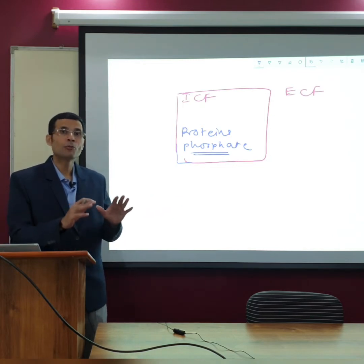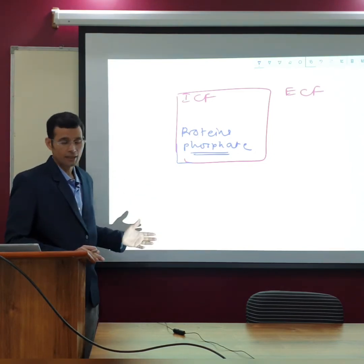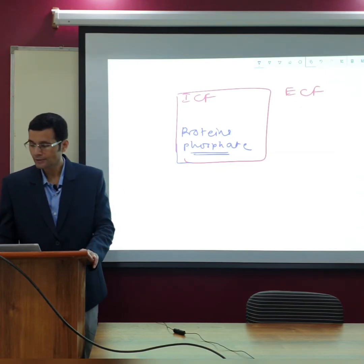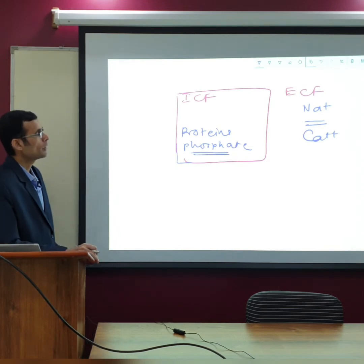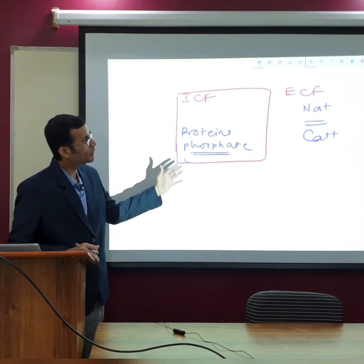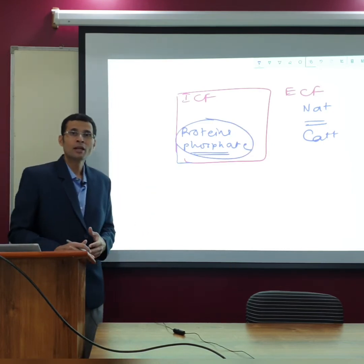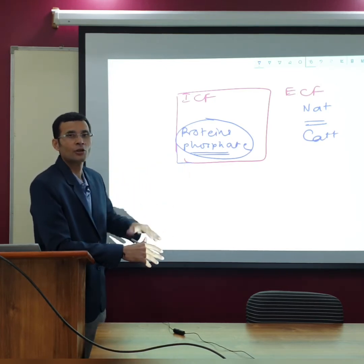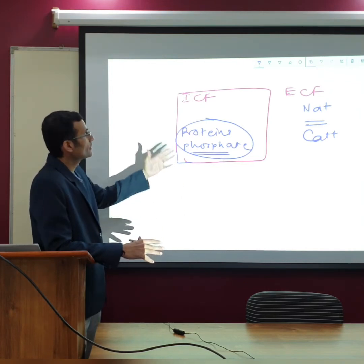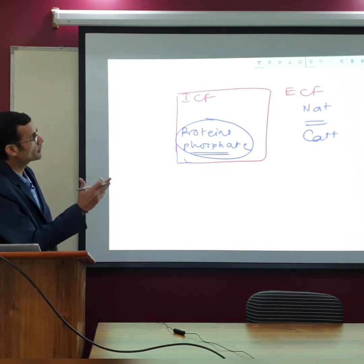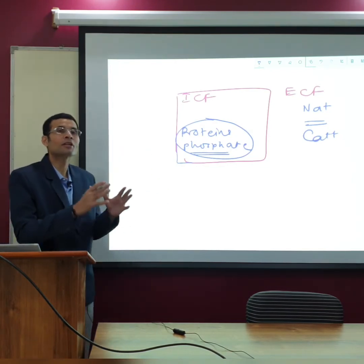This brings us to the electrical gradient. The ECF has a high number of cations, mainly sodium but also calcium, while the ICF has relatively fewer cations and relatively more anions — negatively charged proteins and phosphate — because these anions cannot escape the cell. This imbalance, with less cations and more anions in the ICF, creates the electrical gradient.